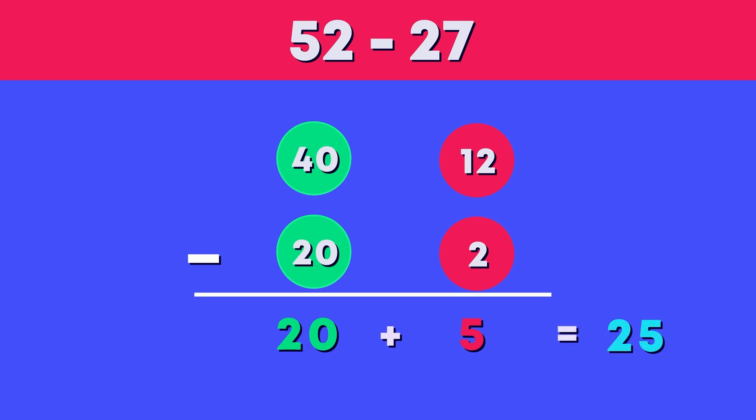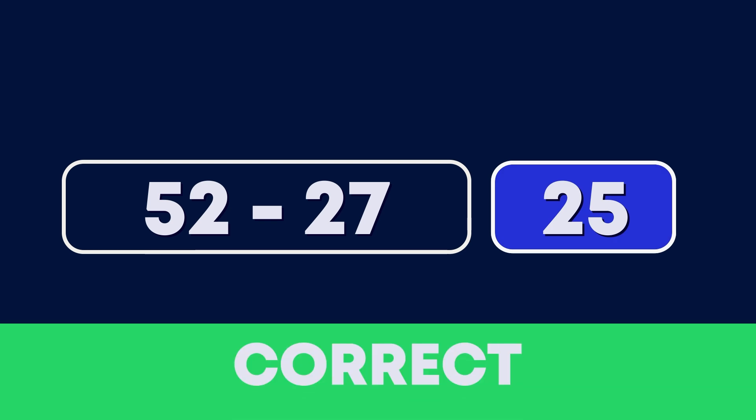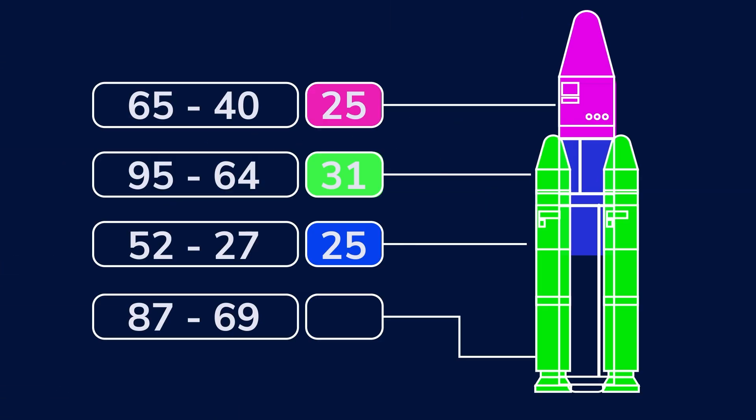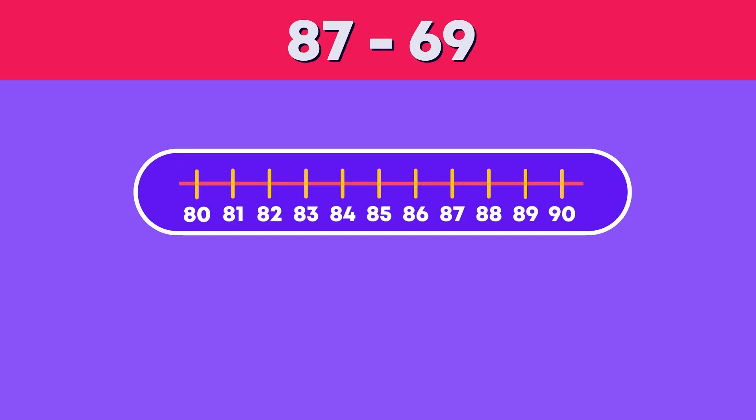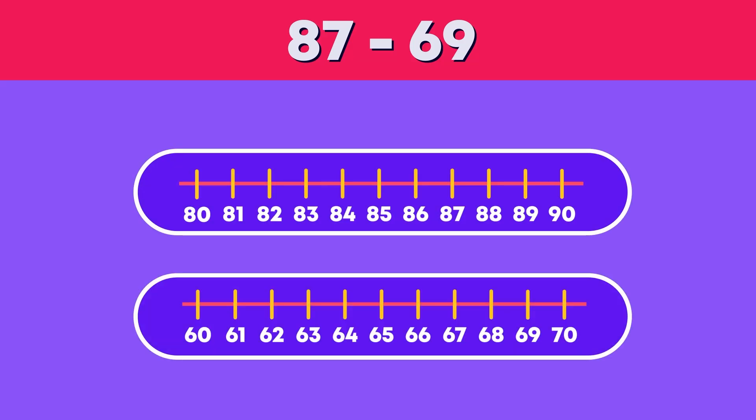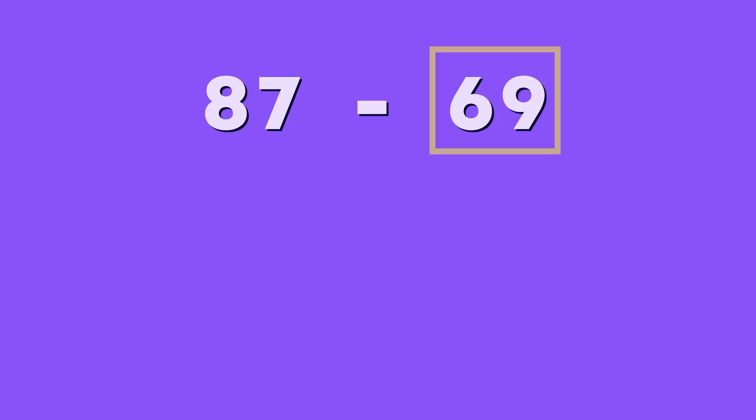Great job everyone! The last code number is 87 minus 69. The bump strategy helps us subtract quickly by using multiples of 10. Let's try it. First we find which number is closest to a multiple of 10. Is 87 or 69 closer to a multiple of 10? 69, well done! What can we do to 69 to make it a multiple of 10? Yes, add 1.